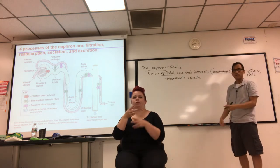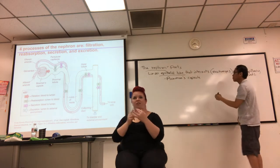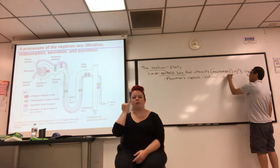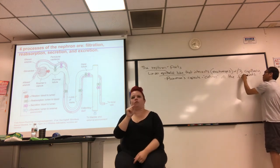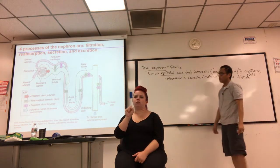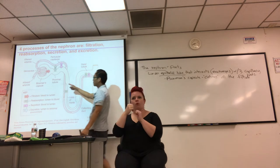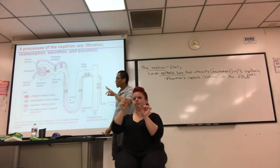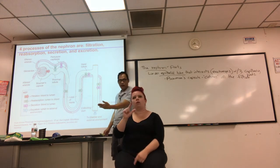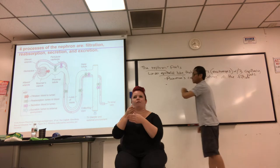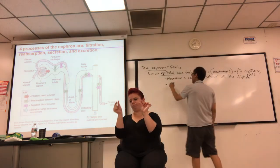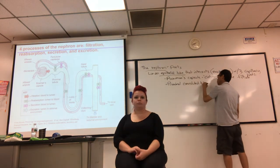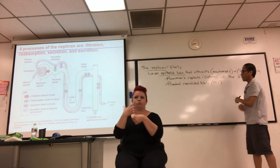The Bowman's capsule catches all the filtrate — none of it escapes, it's completely wrapped around the glomerulus. That capsule is connected to the rest of the tube. The first and most proximal part to the capsule is called the proximal tubule — it's really twisty and turny, so it's usually called the proximal convoluted tubule, abbreviated PCT. It's the first part after the capsule.